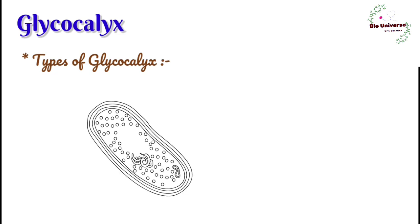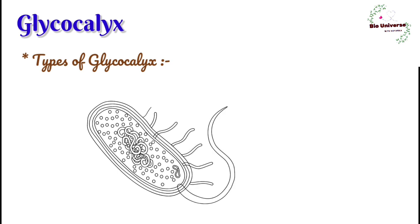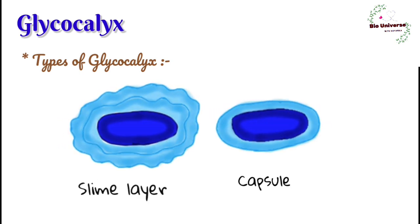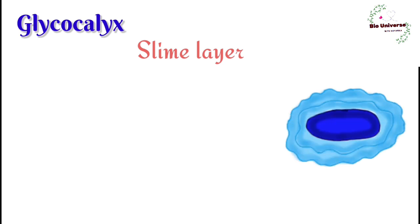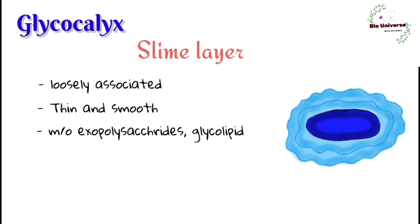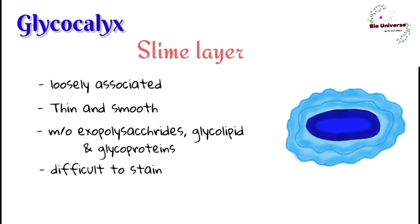Types of glycocalyx: based on the bacterial species, the structural features and chemical composition of glycocalyx can change, but this extra coat can develop in one of two forms — slime layer and capsule. Slime layer is an organized extracellular layer that surrounds the bacterial cell wall. It is loosely associated with the bacterial cell; it is a thin and smooth structure. It is made up of exopolysaccharides, glycolipids, and glycoproteins.